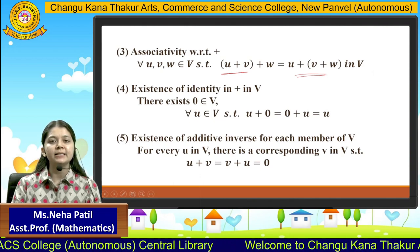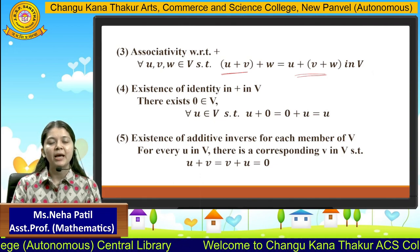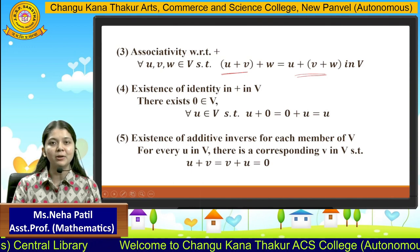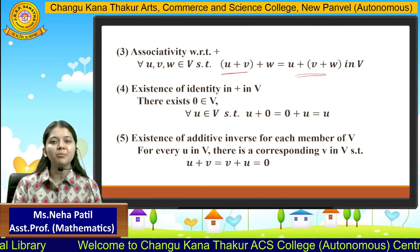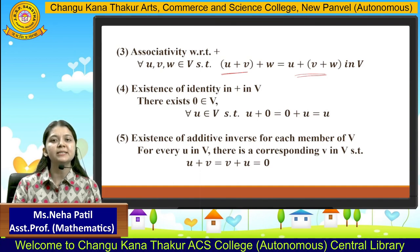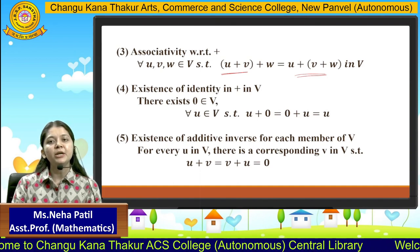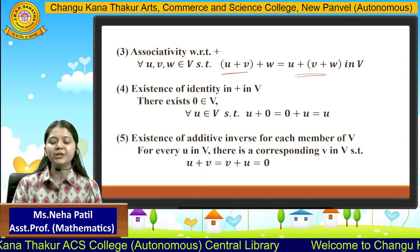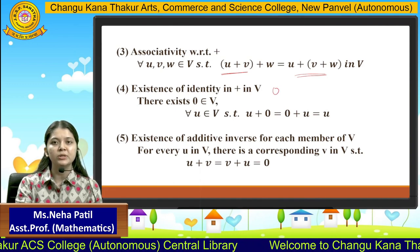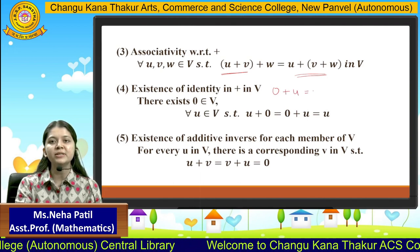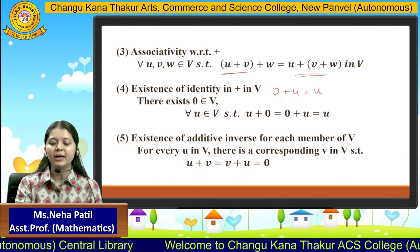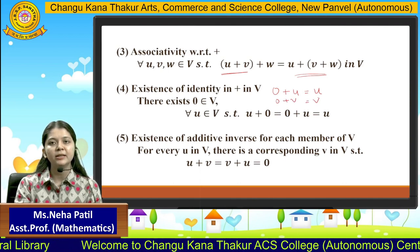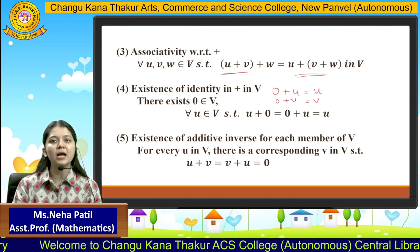The fourth property is the existence of additive identity. We must find one element such that when it is added with any element of the set, the result is that same element. In addition, the additive identity element is zero. Adding zero with any element always gives back that element — that is the additive identity.